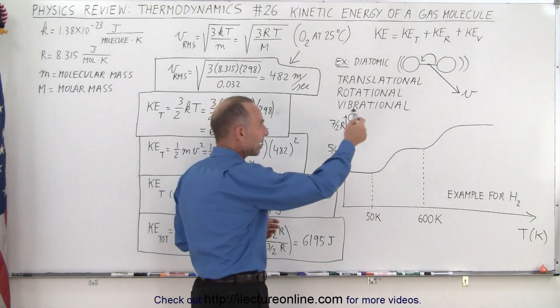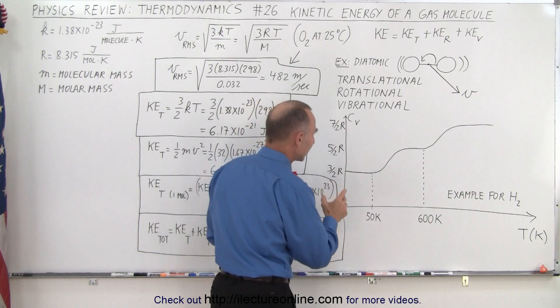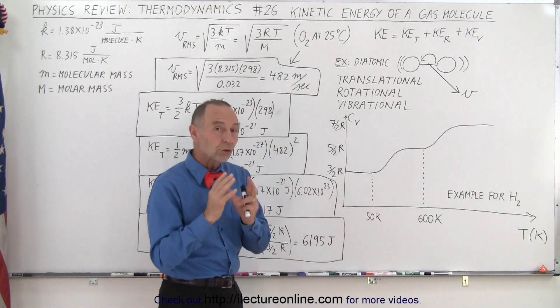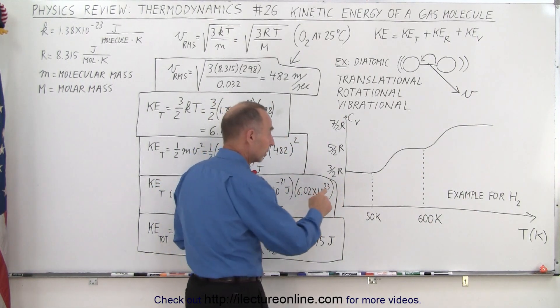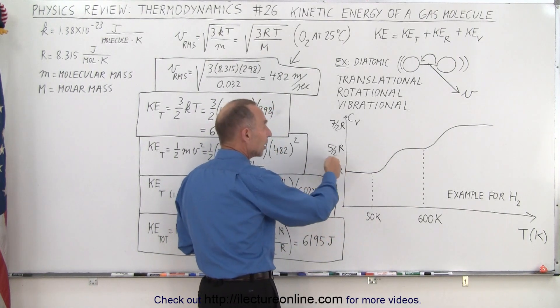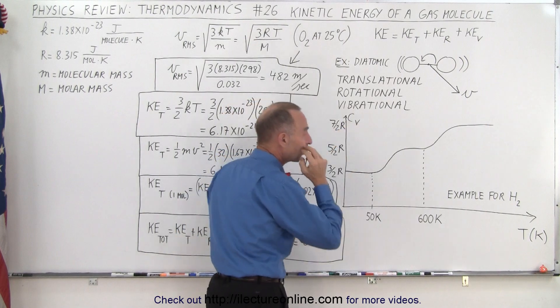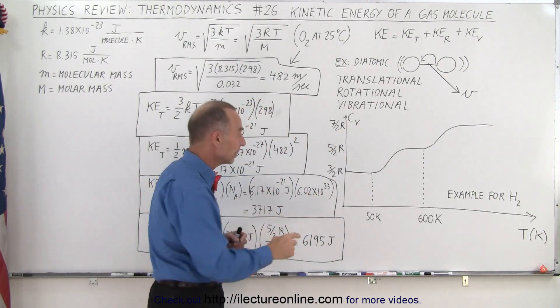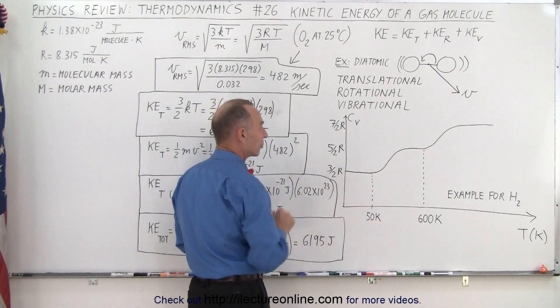So here we have a graph that kind of represents that. Here we see that solely due to translational motion it can have a certain amount of kinetic energy. The constant we use for that, which is the C sub V, the specific heat for constant volume, is three halves the gas constant.